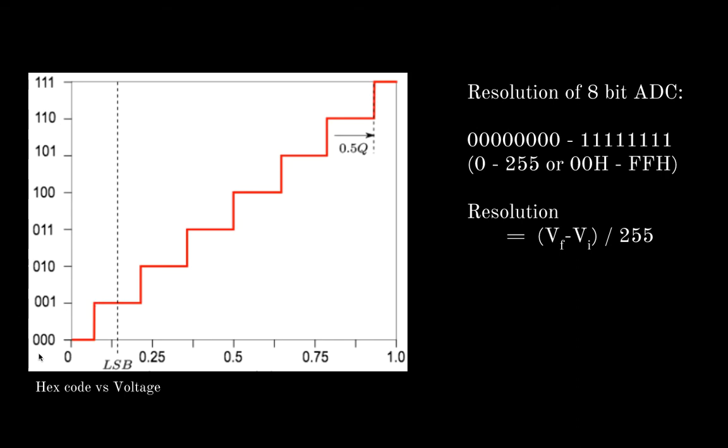Here we have the graph of hex code versus the voltage. On the x-axis we have this part as the resolution, and we can mark the voltage here and see what hex output should we supposedly get.